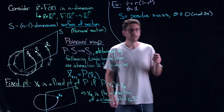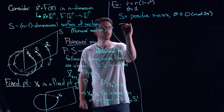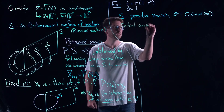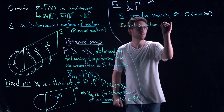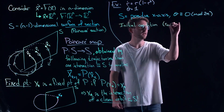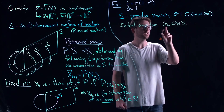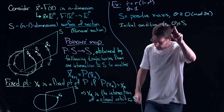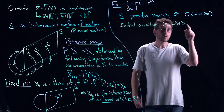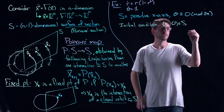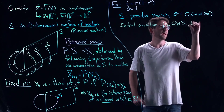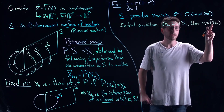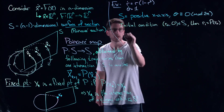If I have an initial condition (R0, 0), which belongs to my section — an initial radius and theta = 0 — the question is what is R1, where do I go next? So R1 = P(R0). My iteration under my Poincaré map comes from... the way this has to happen is theta needs to make one full revolution, which takes 2π time units.